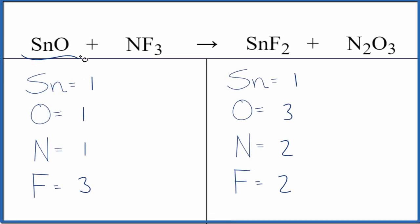Let's balance the equation for SnO plus NF3. We have tin oxide, and then we have nitrogen trifluoride. The first thing we need to do is count the atoms up. I've already done that here.